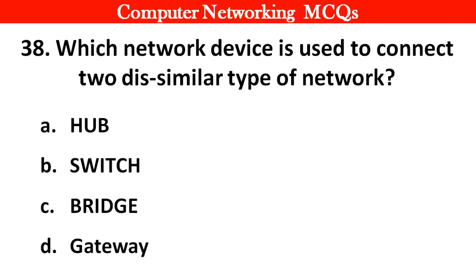Question 38: Which network device is used to connect two dissimilar types of networks? Options: A. Hub, B. Switch, C. Bridge, D. Gateway. Right answer is option D: Gateway.